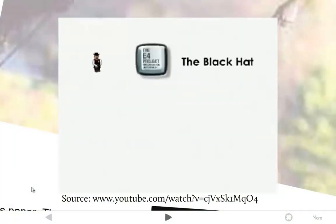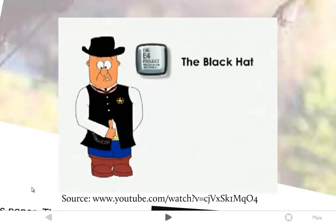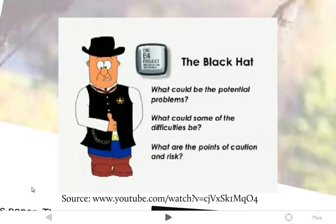The black hat is called the conservative hat. It focuses on caution. Think of judicial robes and wild west marshals. The black hat asks: what could be the potential problems, what could some of the difficulties be, what are the points of caution and risk. The black hat helps make better decisions. It points out difficulties and explains why things may not work, but it always gives logical reasons for concerns. It is a powerful tool when used in combination with other hats.